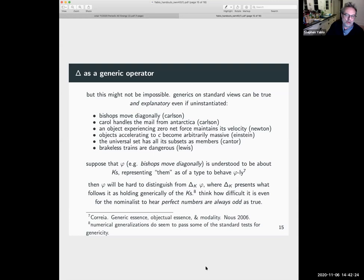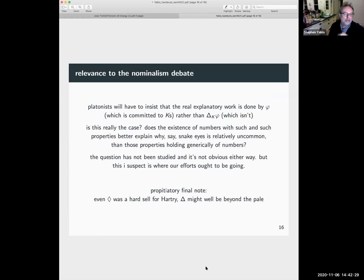Okay, I'm almost there. Relevance to the nominalism debate. Well, Platonists will have to insist that the real explanatory work when you appeal to pure mathematical generalizations or facts is really done by the sentence phi, which might be ontologically committal if it's got existential quantifiers in it, rather than it lies in the nature of these sorts of objects to behave, even that isn't ontologically committal. Is this the case? I have no idea. But this just seems like a really gripping question to me. Does the existence of numbers with such and such properties better explain why snake eyes is relatively uncommon than those properties holding, generically, of numbers? This is what numbers are like. The question hasn't really been studied, and it's not obvious either way.